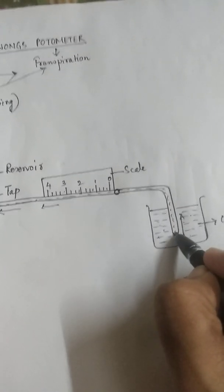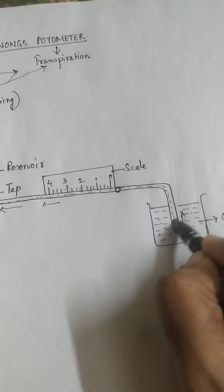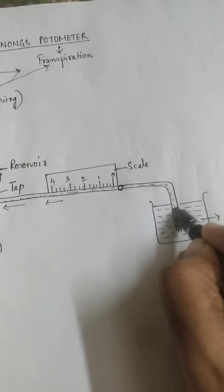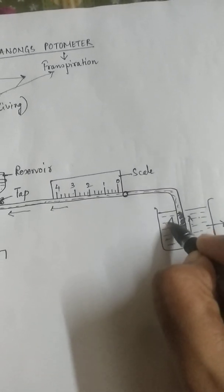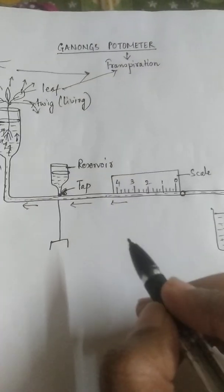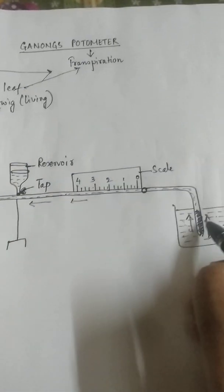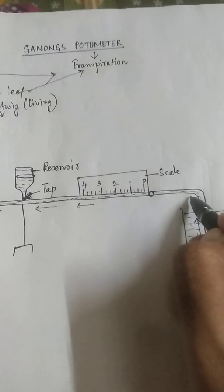So you will see that this colored water is gradually rising as time is passing by. This colored water is actually gradually rising through this tube.